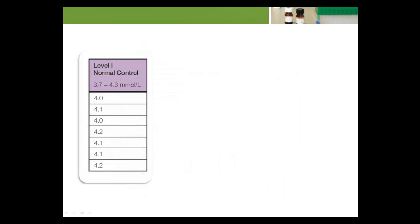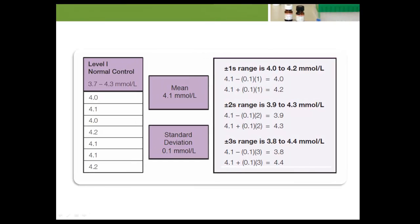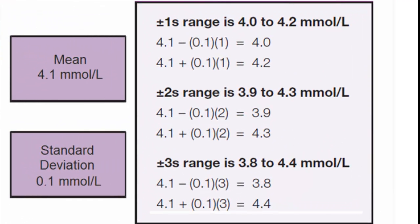Let's begin with the data set from the previous module. The mean for the Level 1 potassium control is 4.1 millimole per liter, and the standard deviation is 0.1 millimole per liter. This is an illustration of how positive-negative 1sd, positive-negative 2sd, and positive-negative 3sd quality control limits are calculated using that mean and standard deviation.